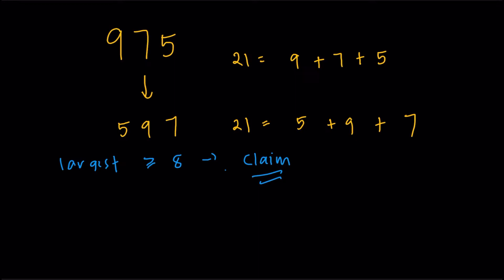Let's just assume the opposite. Let's just say the largest is a 7. So in this case, what's the largest possible sum that I could make? Well, if the largest is a 7, the largest sum I would be making is 7 plus 6 plus 5. And that's just equal to 18.